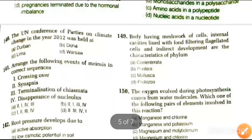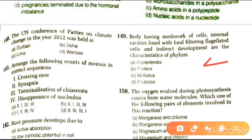Next question: the body having meshwork of cells, internal cavities lined with food-filtering flagellate cells, and indirect development are characteristics of which phylum? Options are Coelenterata, Porifera, Mollusca, and Protozoa. The answer is phylum Porifera.